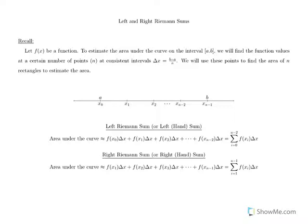Looking at this picture, we have n different points — actually n plus 1 different points. We have x sub 0 all the way to x sub n minus 1. The first one we're going to call a, the last one we're going to call b. We have a certain number of intervals, and the base of each of those intervals — the change in x — is going to be delta x in all of those.